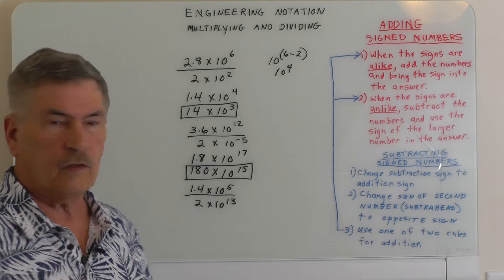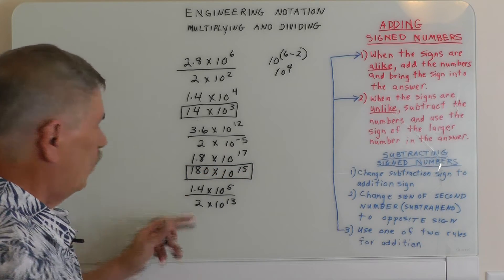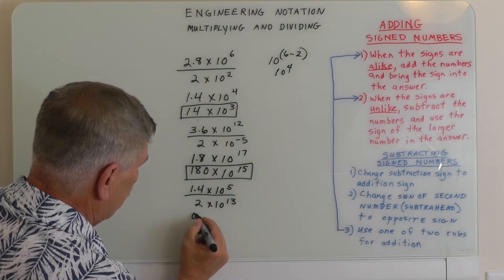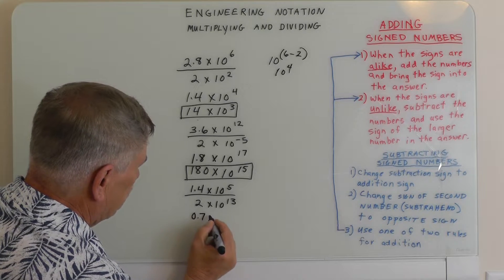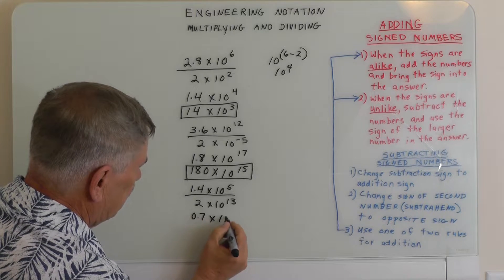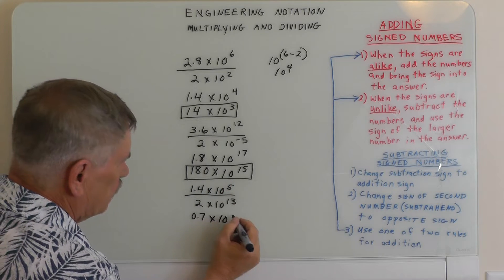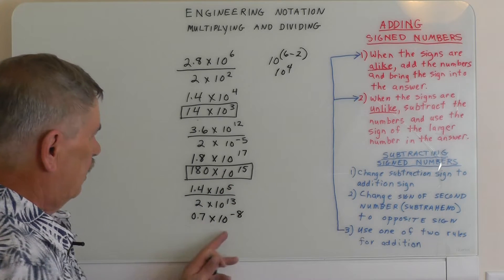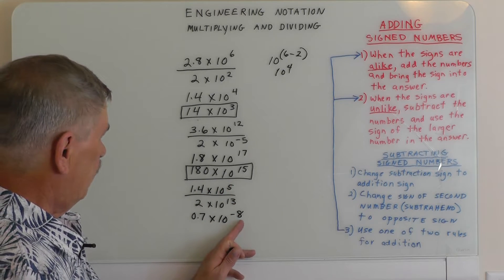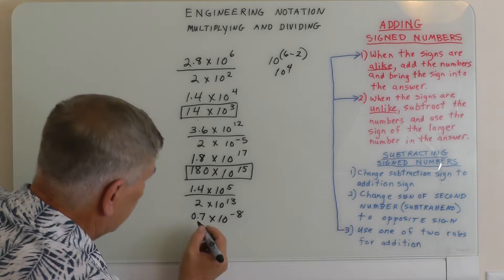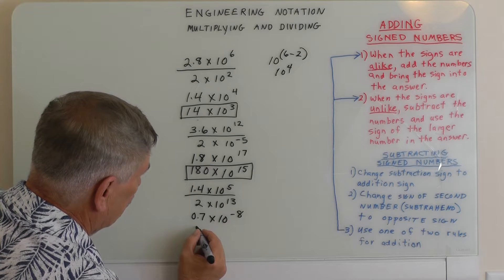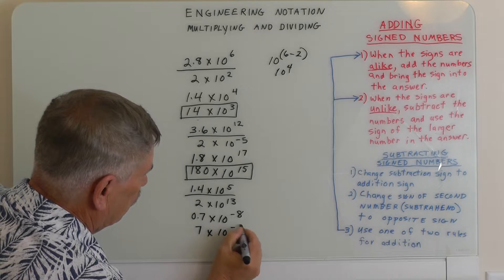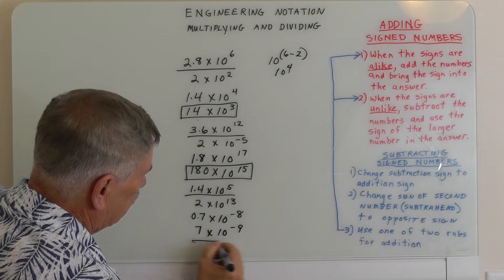We have another example: 1.4 divided by 2 gives us 0.7 times 10. Then 5 minus 13 is going to be minus 8. Making this number smaller makes it bigger, so this is going to be 7 times 10 to the minus 9th.